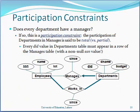Next, participation constraints. The participation of a department in managers is said to be total — a relationship is called total if all entities of that entity set may be participants in the relationship. A relationship is called partial if only some of the entities of that entity set may be participants. For example, a marriage relationship among employees could be partial.